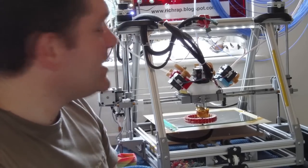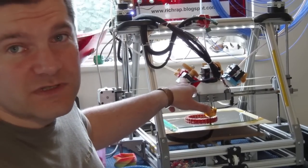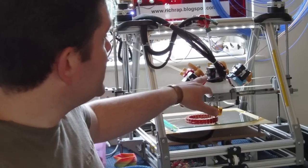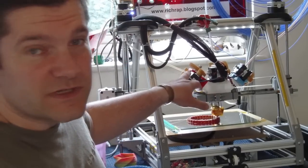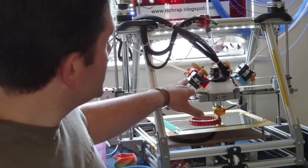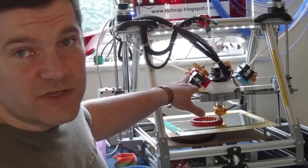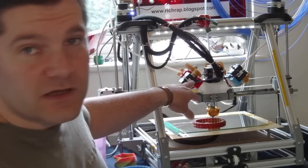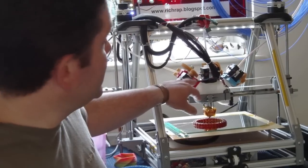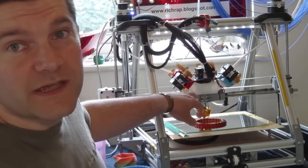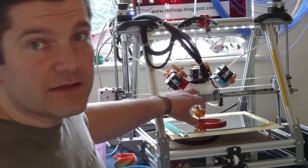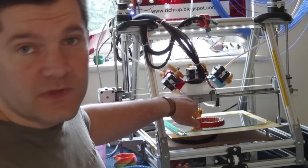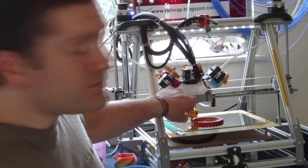So what we've got here, we've got three separate NEMA 14 motor extruders with herringbone gears, and they're all connected individually so they can be each individually controlled. And they're all forcing the filament into a single hotend. So that's doing the blending and pushing out the final filament.